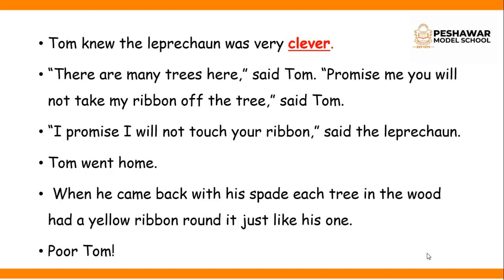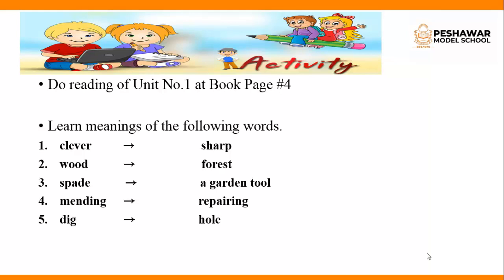Tom went home to get the spade. But when he came back, each tree in the wood had a yellow ribbon around it, just like the one he had tied. The leprechaun was very clever — he had tied yellow ribbons around all the trees in the forest. Poor Tom — he could not get rich, and he was tricked by the leprechaun. This is the end of the story.